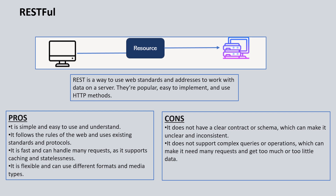The main drawback of REST is that there is no clear-cut contract or schema defined, which sometimes makes it unclear or inconsistent when you want to consume those APIs as a consumer. It also doesn't support complex queries or operations, meaning you might need to call APIs multiple times to get the data you need. The main usage of REST is where you need high speed and high scalability, and also where the data model is very simple and stable.